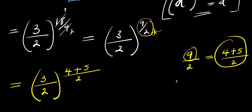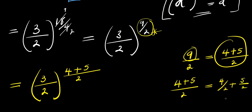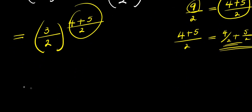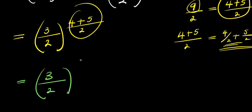Now, don't forget if you have 4 plus 5 divided by 2, this is just like writing 4 divided by 2 plus 5 divided by 2. So we can replace this accordingly. From here, we are simply going to have 3 divided by 2, raised to the power of 4 divided by 2 plus 5 divided by 2.